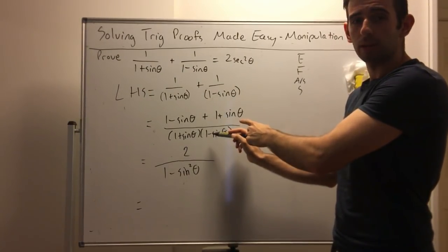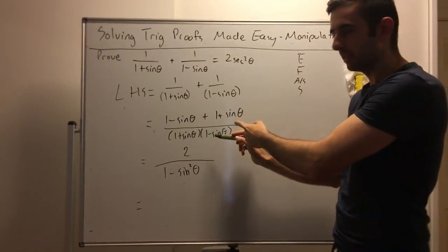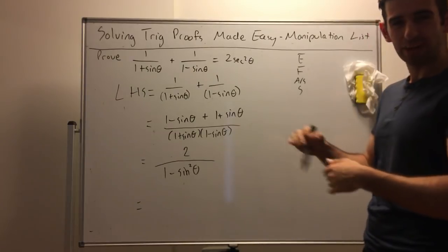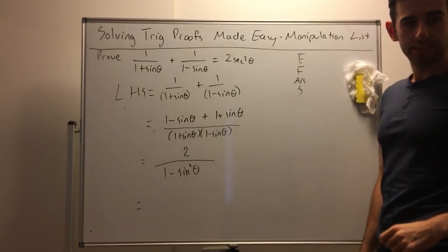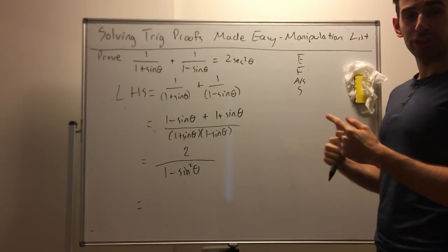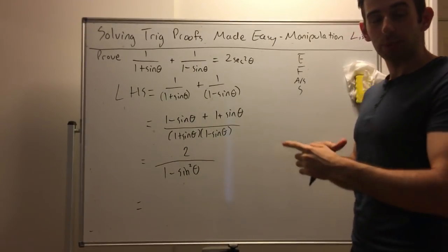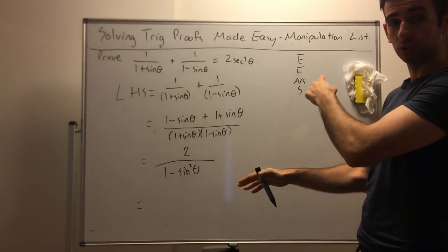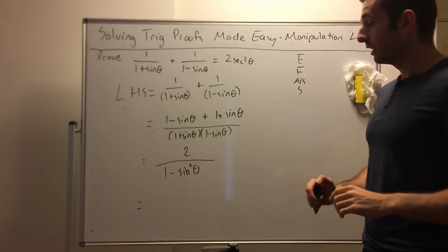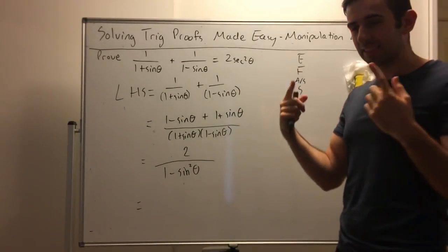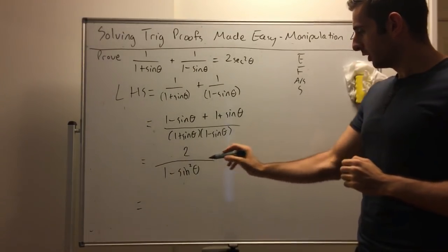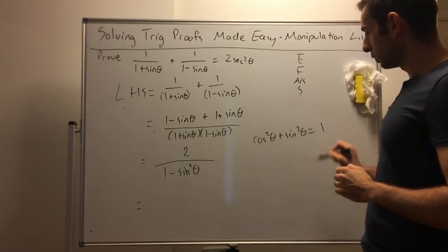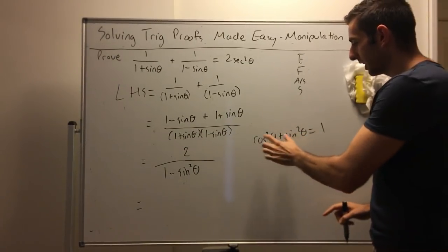Going through the list again: can I expand? No. Factorize? Technically yes, but that would negate the previous step, so no. Add or subtract fractions? It's a single fraction so no. That means I'm left with S — simplify or substitute an identity. There's nothing to simplify, so I have to substitute an identity. This is why the list is good: it rules out everything else and tells you exactly what to do.